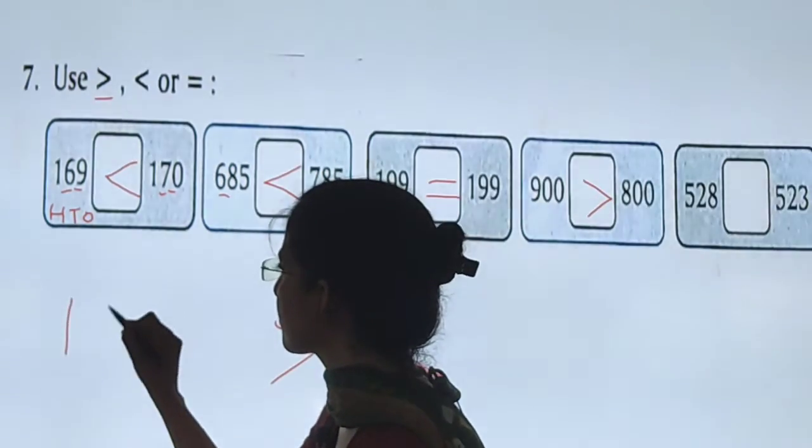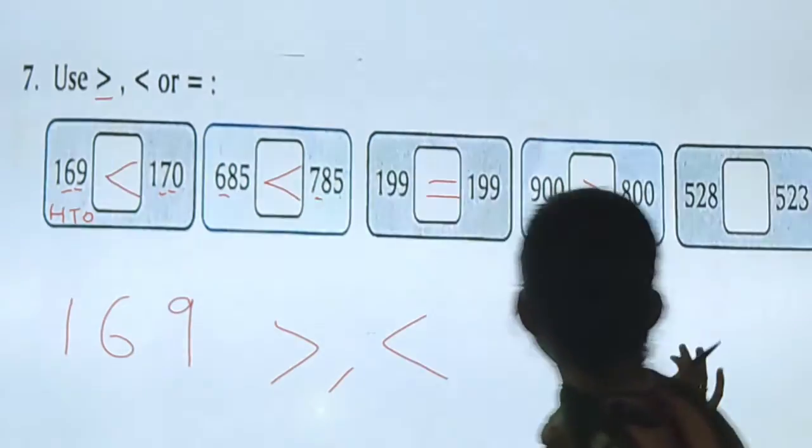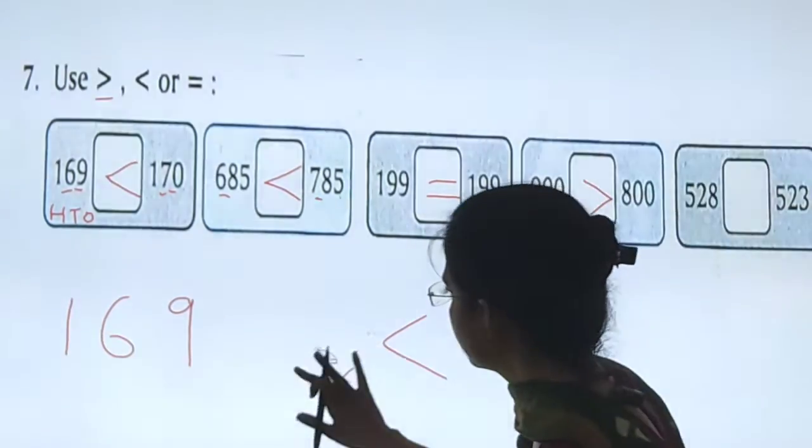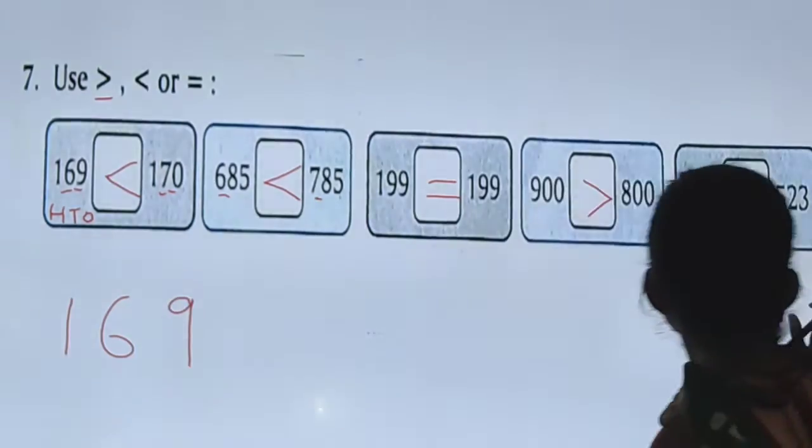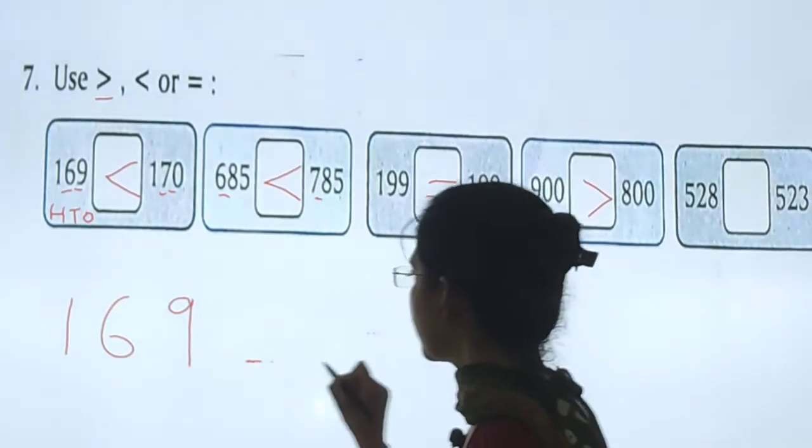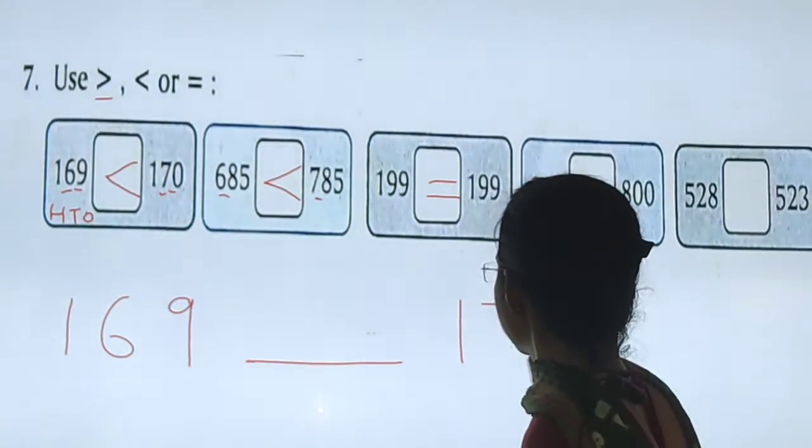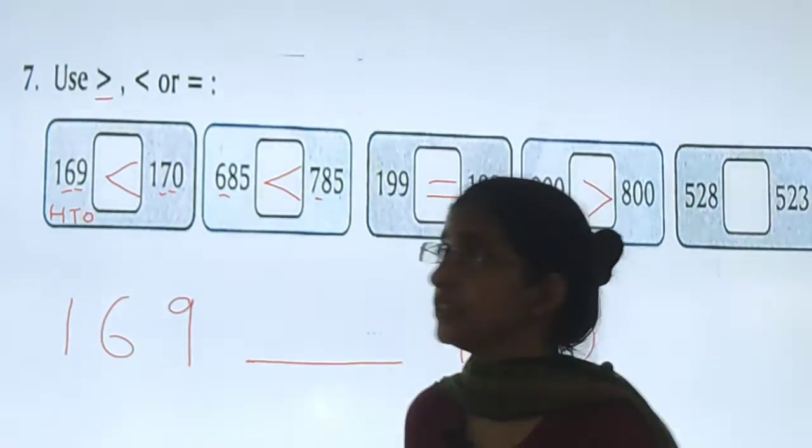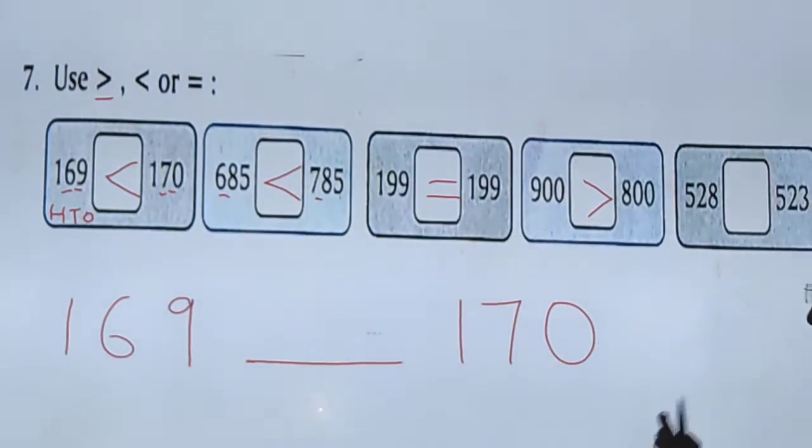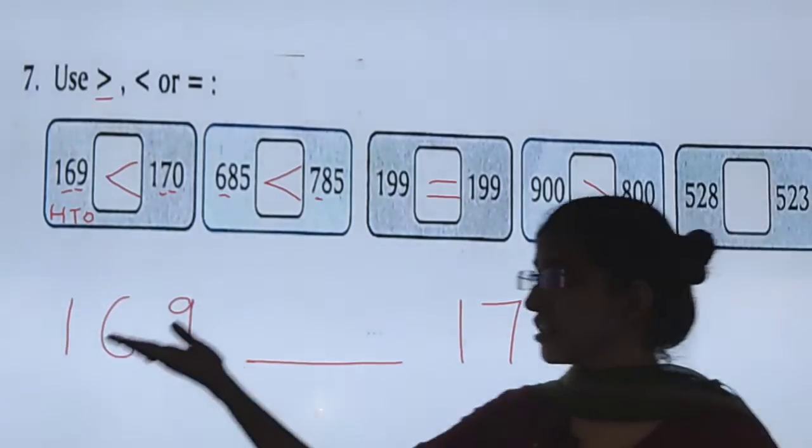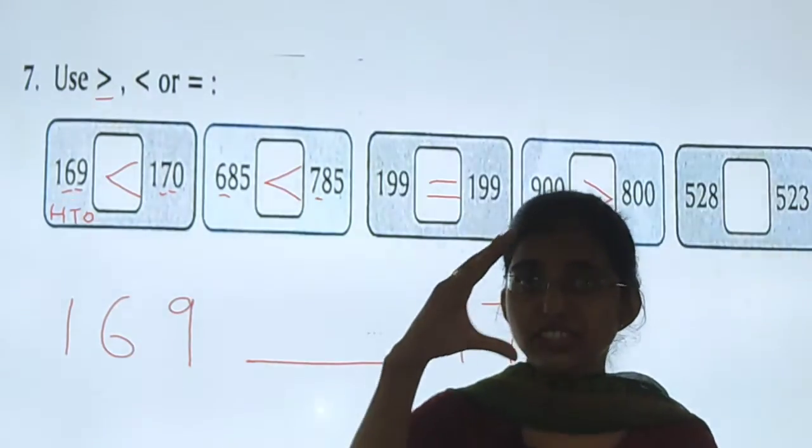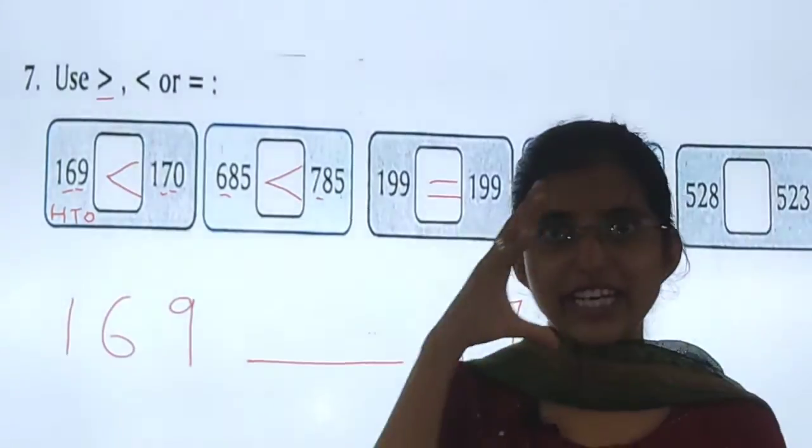See, 169 and 170. Suppose you are having 169 chocolates here and 170 chocolates here. Aapke paas ek jaga 169 chocolate hai aur ek jaga kithi chocolates hai? 170. And this is your mouth. Imagine that this is your mouth. We are eating like this.